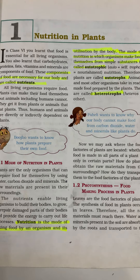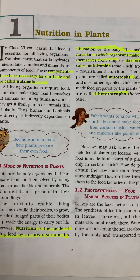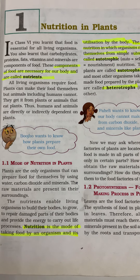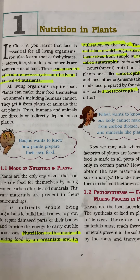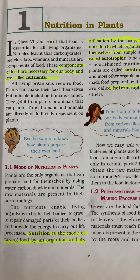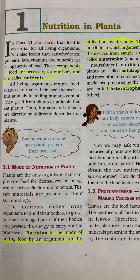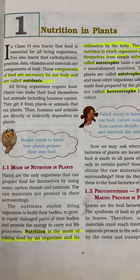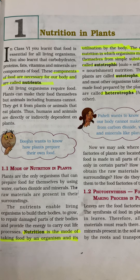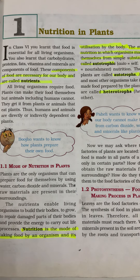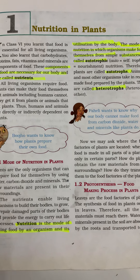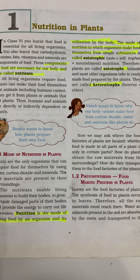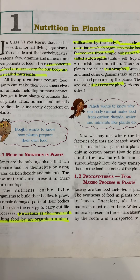Nutrition in Plants. First, before we understand nutrition, we should understand what are nutrients. The components of food which are necessary for our body are called nutrients. Then what is nutrition? The mode of taking food by an organism and its utilization by the body is called nutrition.